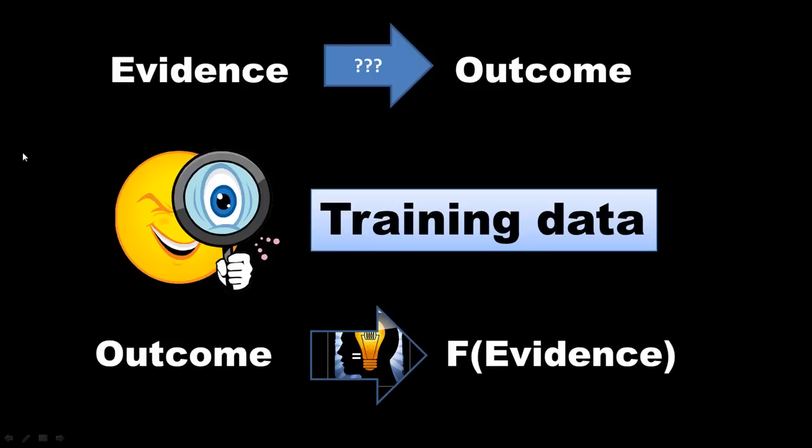In data mining what we do is we've got training data, and the data mining algorithm takes a really close look at the training data. It analyzes the data, sifts for underlying patterns and everything, and ultimately once it's done, we now have some idea of what relates the outcome to the evidence.